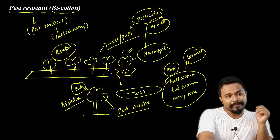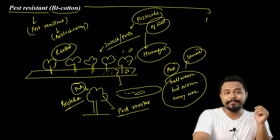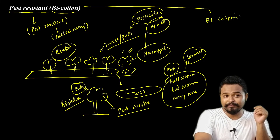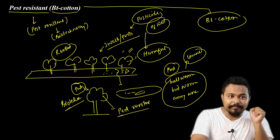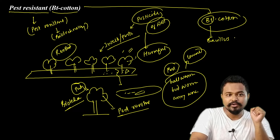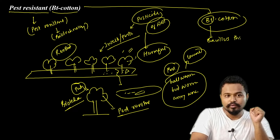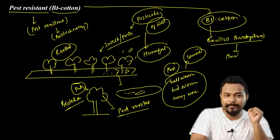Now the question is, why is the name BT cotton given to this pest-resistant variety? The full form of BT is Bacillus thuringiensis — this is actually a bacterium.